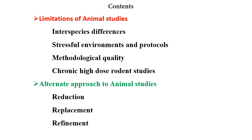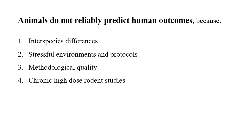I will also discuss the alternate approaches to animals — how we can reduce the number of animals used, how we can replace animals with other assays, and refinement to ensure the well-being of animals. Animals do not reliably predict human outcomes because of interspecies differences, stressful environments, methodological quality, and chronic high-dose rodent studies. Anatomically, animals may have similarities with humans, but the conditions they adapt to are not similar.